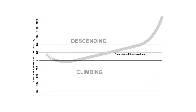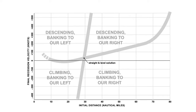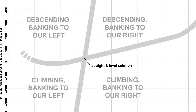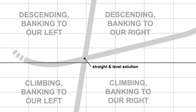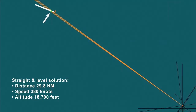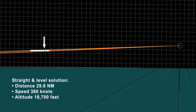That meant there's one particular scenario where the object could be moving straight and level: it's 29.8 nautical miles away, going 380 knots at 18,700 feet.